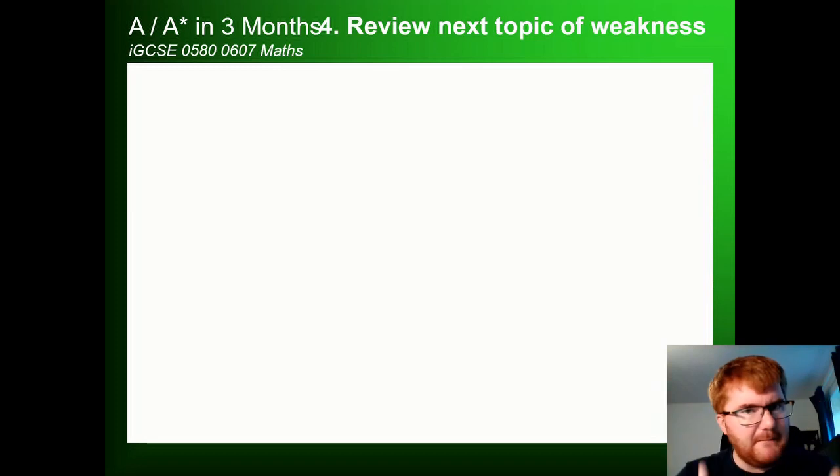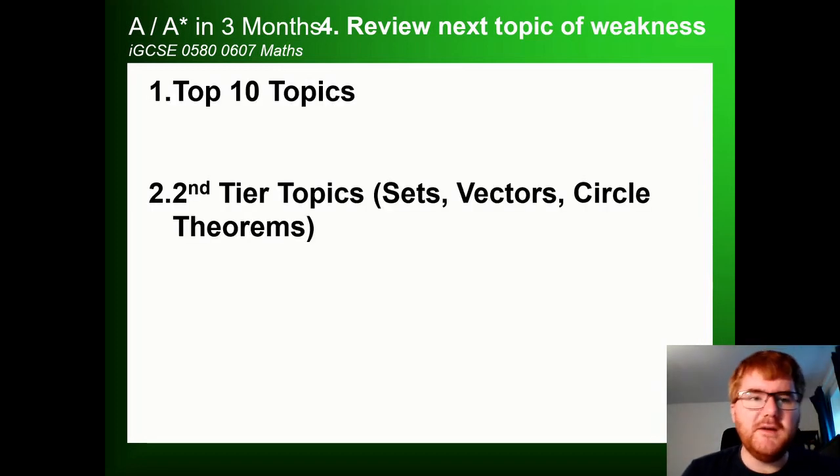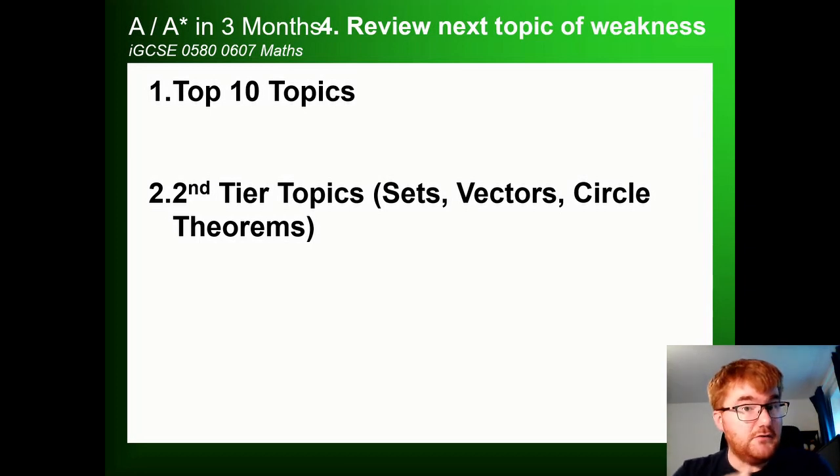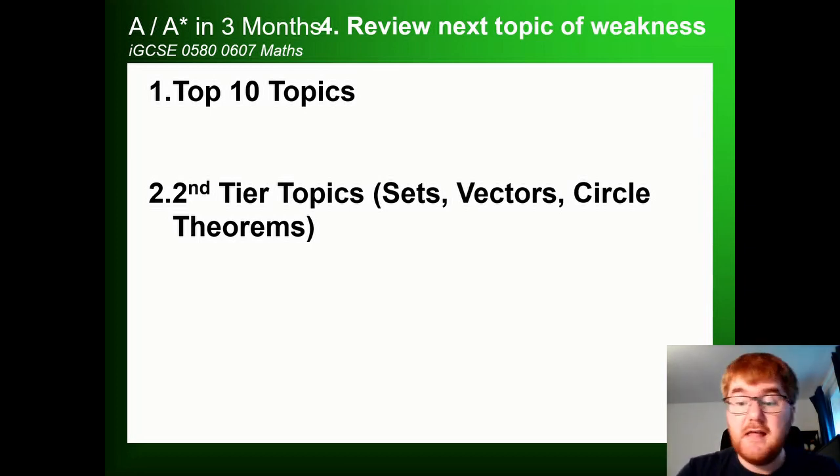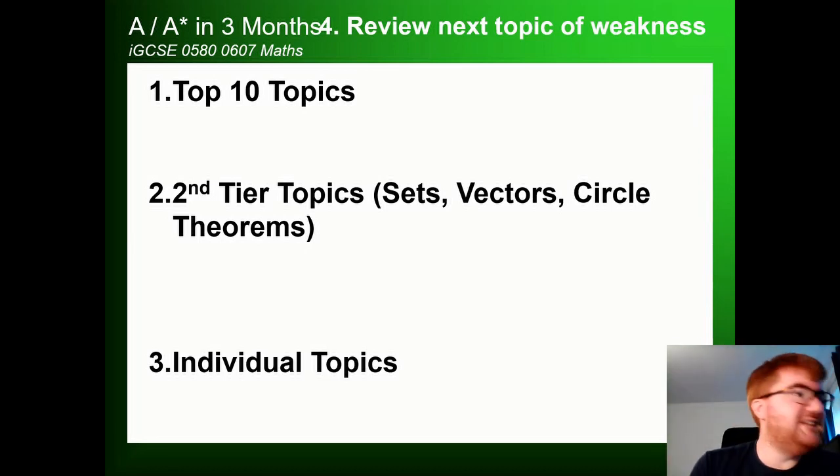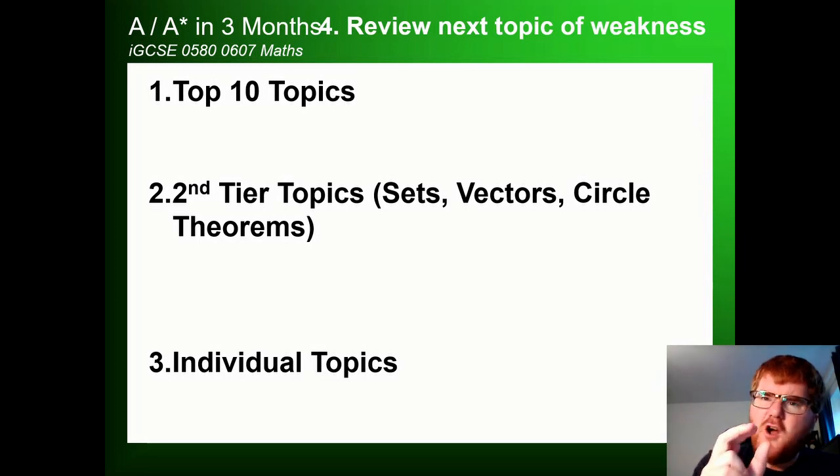Now we go back to step four again, which is the next topic of weakness. Once you're happy with the top 10 topics and these so-called second tier topics, then we then look at individual topics. So we look at a topic that doesn't come up maybe frequently, but we need to revise. A good example of this would be interior angles, for example. And now you can focus your revision on really specific topics of weakness that could make the difference then between your A grade and then your A star.